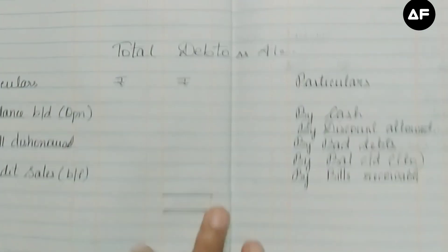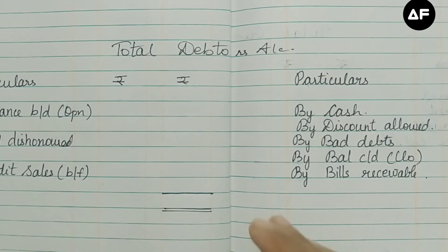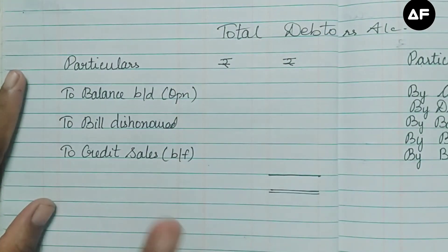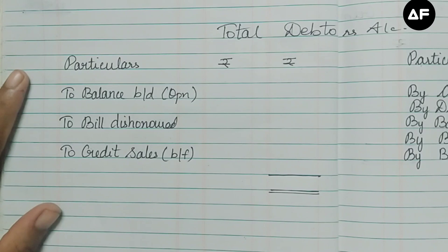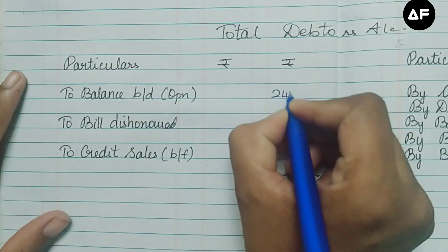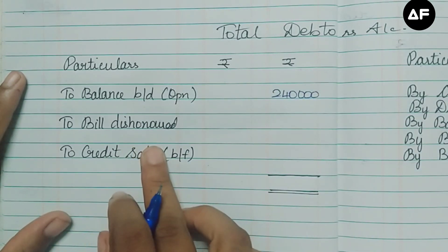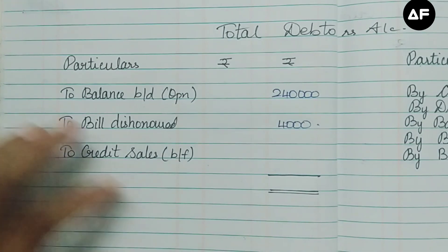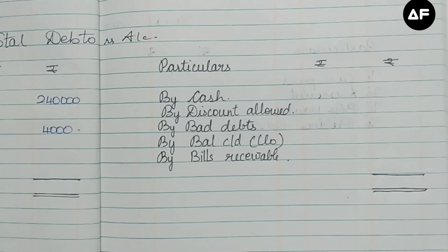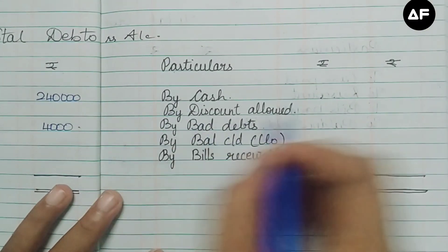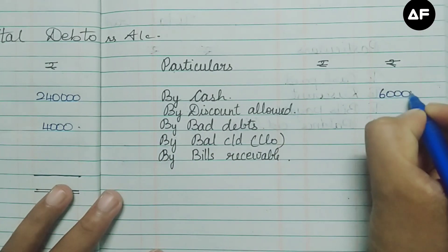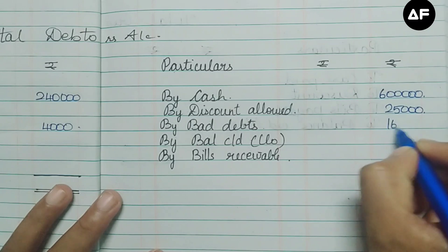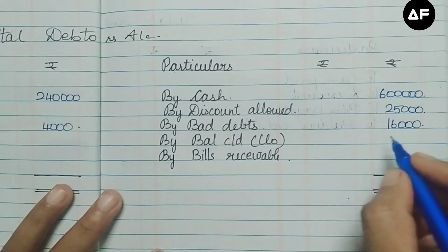I've written out the format of the sundry debtors account after analyzing the problem. Starting with the debit side: opening balance of sundry debtors is 2,40,000; bill dishonor transferred from the bills receivable account is 4,000; and the credit sales which we have to find out. Moving to the credit side: cash received from sundry debtors is 6 lakhs; discount allowed is 25,000; bad debts is 16,000.